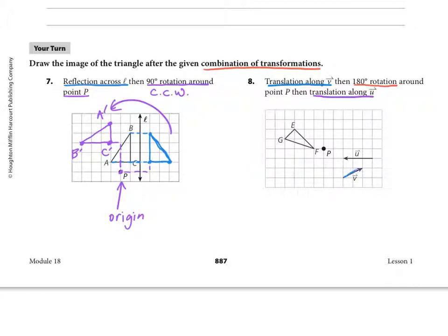In number 8, we have one transformation, then a second transformation, and a third transformation. We're going to translate along vector V. Vector V tells us where to go and how far. Vector V looks like it's going to the right 2 times and up 1. From point G, if I go right 2 and up 1, there's my G. From E right 2 and up 1, there's E. And F right 2 and up 1 is this one. Here is my image after the first transformation.